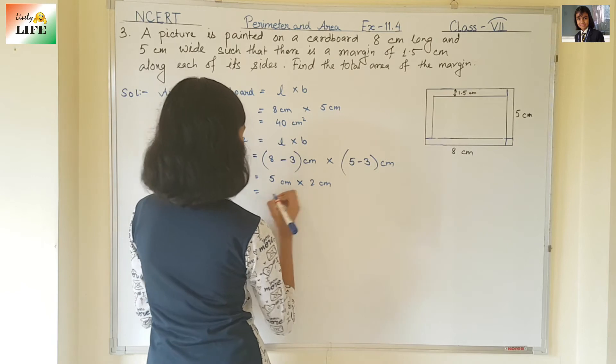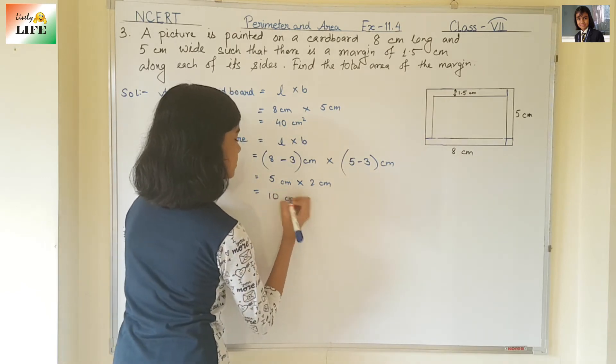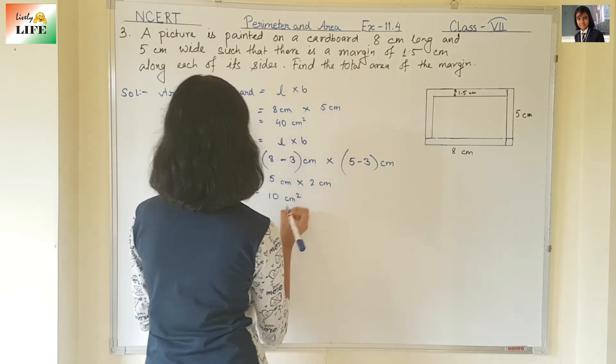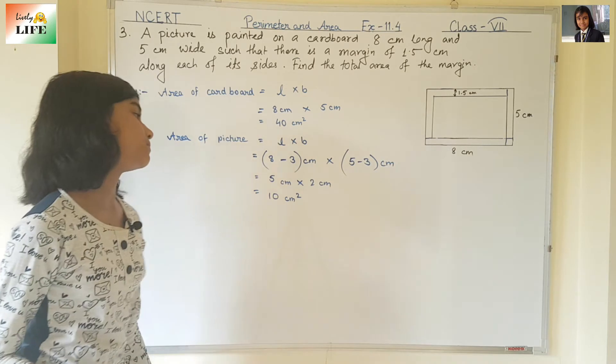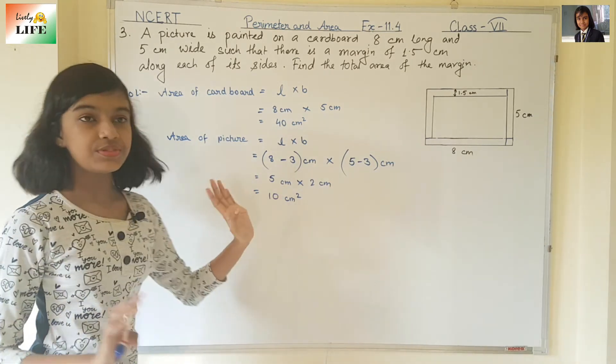5 times 2 = 10 cm². This is the area of the picture.